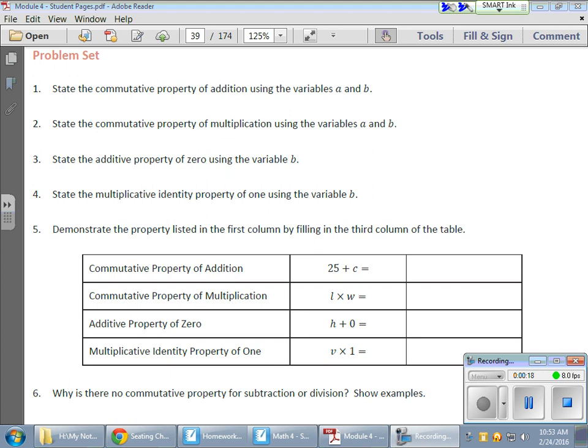So in the first statement here, it asks, state the commutative property of addition using variables a and b. Now, if we took values, actual numbers, we would know that 2 plus 3 equals 3 plus 2.